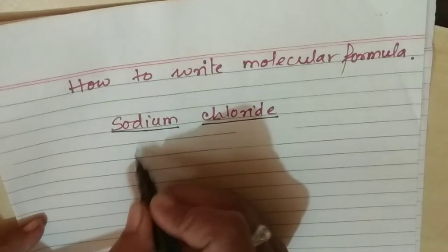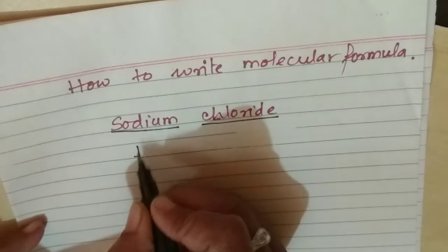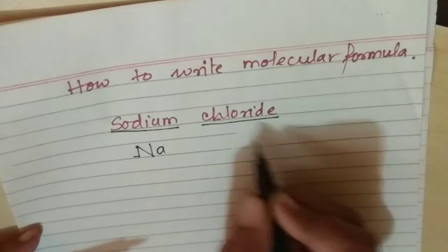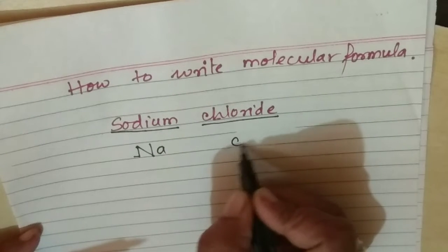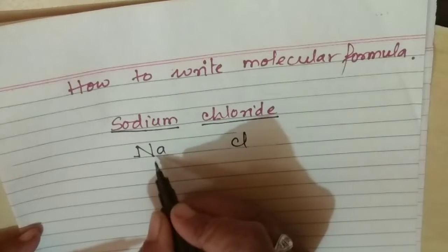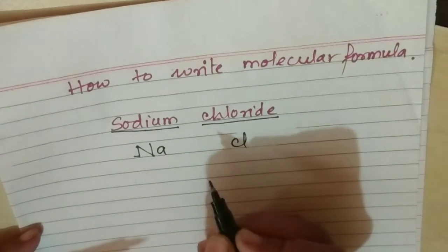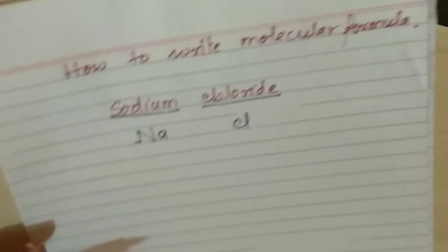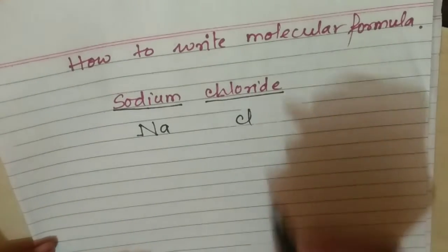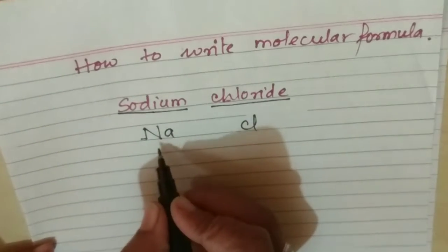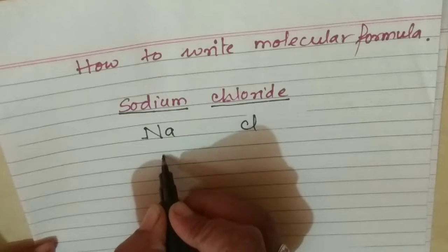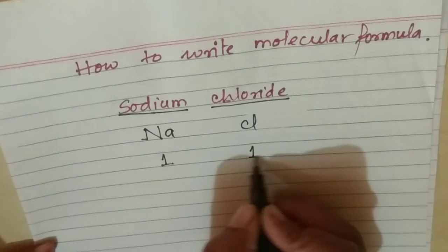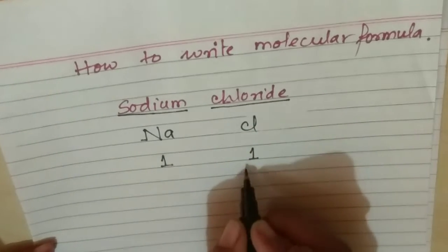We will write the formula of Sodium and Chloride. Na is the symbol of Sodium and Cl is the symbol of Chloride. The valency of Sodium is one and Chlorine is also one.